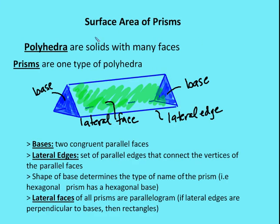Let's talk about prisms first and the category under which prisms fall. Polyhedra — 'poly' means many, 'hedra' means faces or solids with faces. So polyhedra means many faces, and a prism is one type of polyhedra.